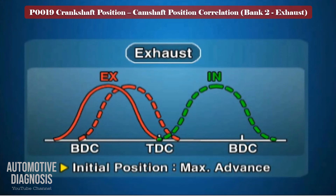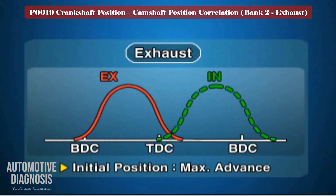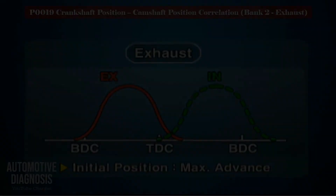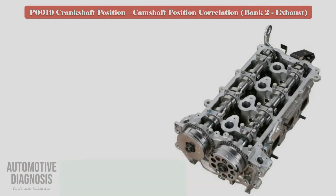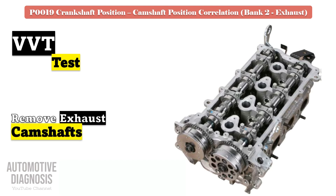Remember that the exhaust VVT is locked at maximum advance when the engine is off, so as soon as the engine is started and warmed up it should rotate toward retard to adjust the timing — otherwise this fault code will be set. For testing the exhaust VVT, remove the bank 2 exhaust camshaft and locate the advance and retard oil passages on the camshaft.